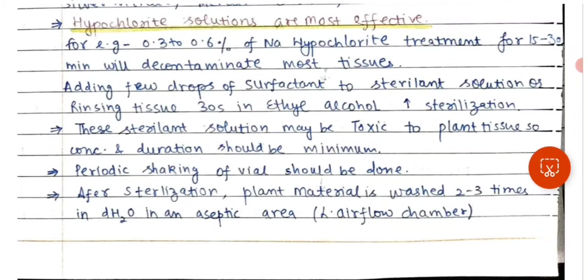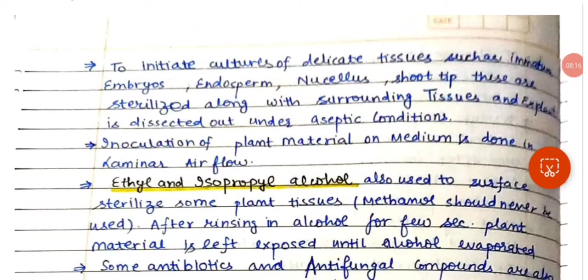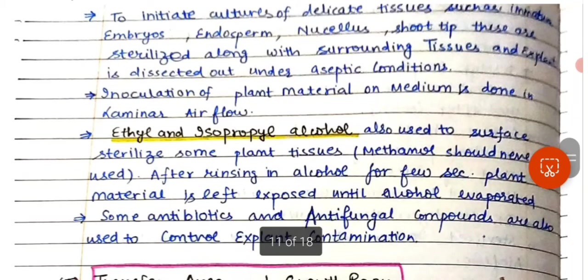These sterilant solutions may be toxic to plant tissue, so concentration and duration should be minimum. Periodic shaking of the vial should be done. After sterilization, plant material is washed two to three times in distilled water in the laminar airflow chamber, which is an aseptic isolated area. To initiate cultures of delicate tissues such as immature embryos, endosperm, nucellus cells, and shoot tips, these are sterilized along with surrounding tissues and the explant is dissected out under aseptic conditions.